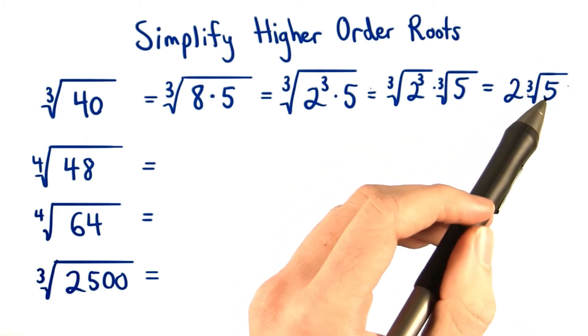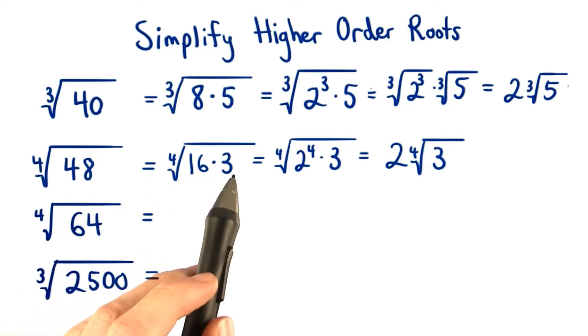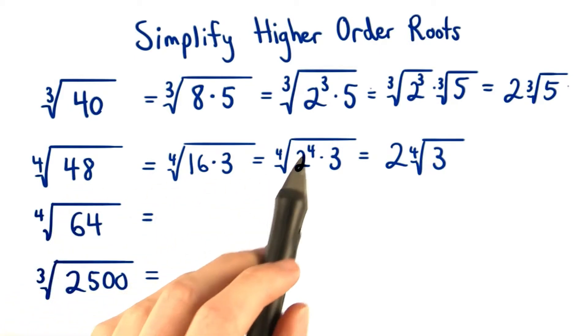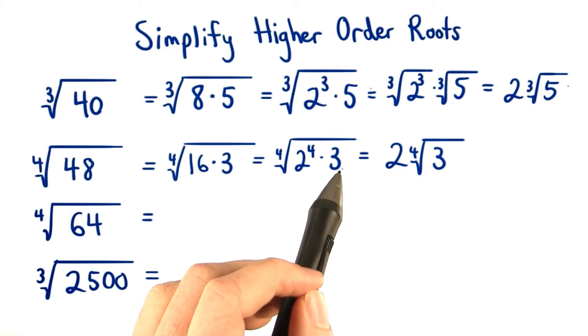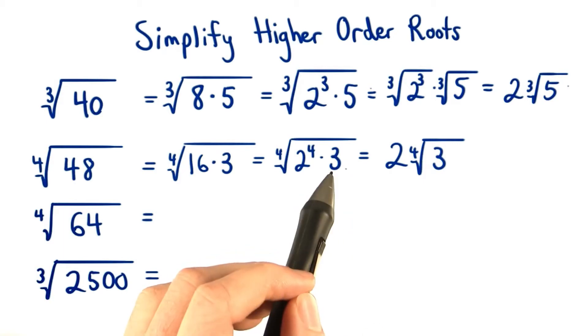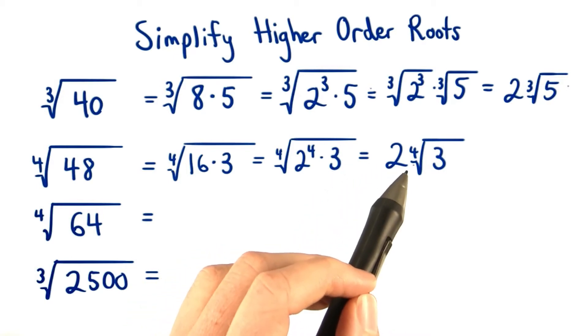For the fourth root of 48, we split up 48 into 16 times 3. We rewrite 16 as 2 to the fourth, and then we can take the fourth root of 2 to the fourth. The root undoes the fourth power. We leave the 3 inside of the fourth root since we don't have four factors of 3. So our final answer is 2 times the fourth root of 3.